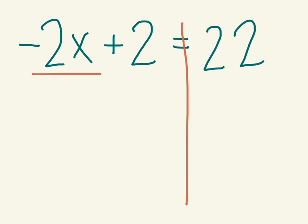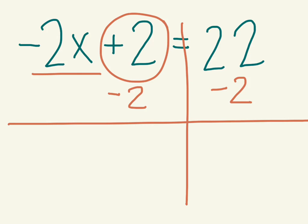And I want to get this part, this part with x, by itself. So the thing that's standing in the way of that is this 2 right here, positive 2. To get rid of two positive chips, I can put two negative chips. But when I do that to one side, I need to do that to the other side as well. So then I'm going to draw a line to see what I have left.